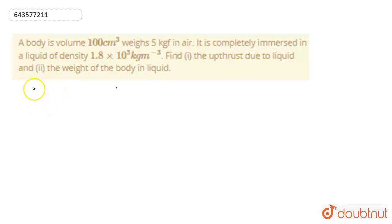Hello students, today we are going to do this sum in which it says the body has a volume of 100 cm³, weighs 5 kg in air. It is completely immersed in a liquid of density 1.8 × 10³ kg/m³. Find the upthrust due to the liquid and the weight of the body in the liquid.